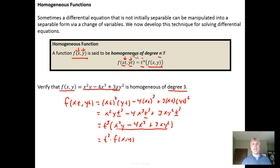And so we were able to plug xt and yt into the function of two variables x and y and the result was that we got t to the third power times f of xy. So this function is indeed homogeneous of degree three.